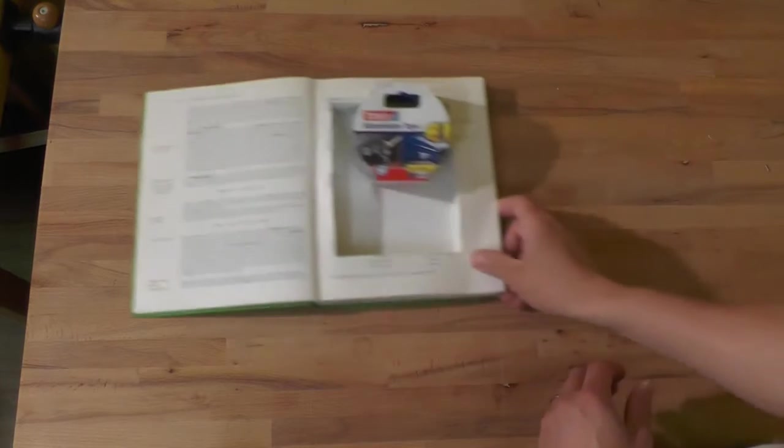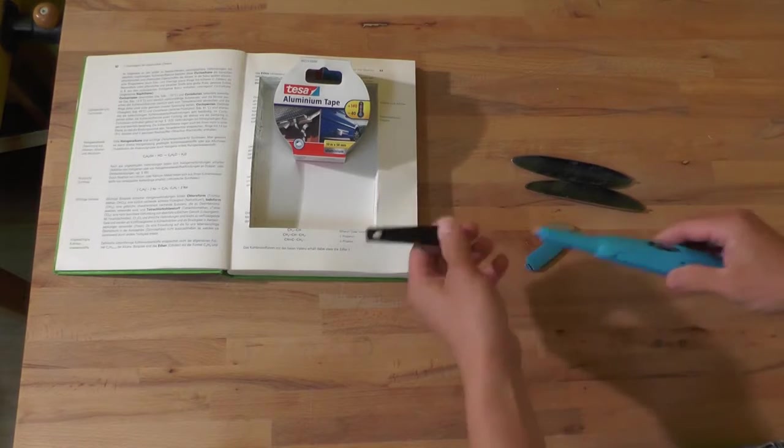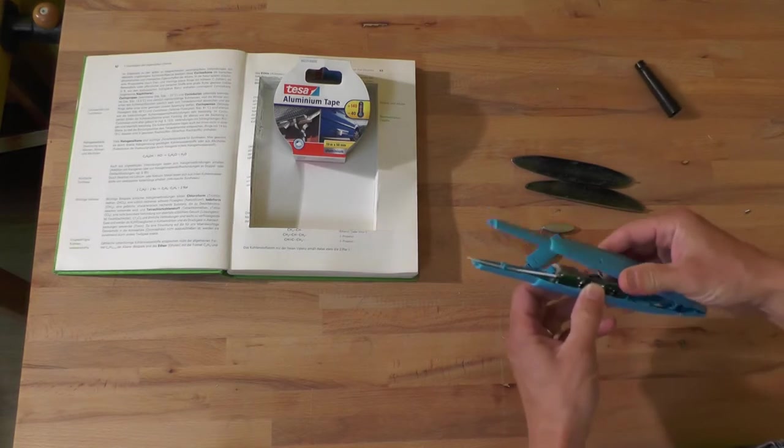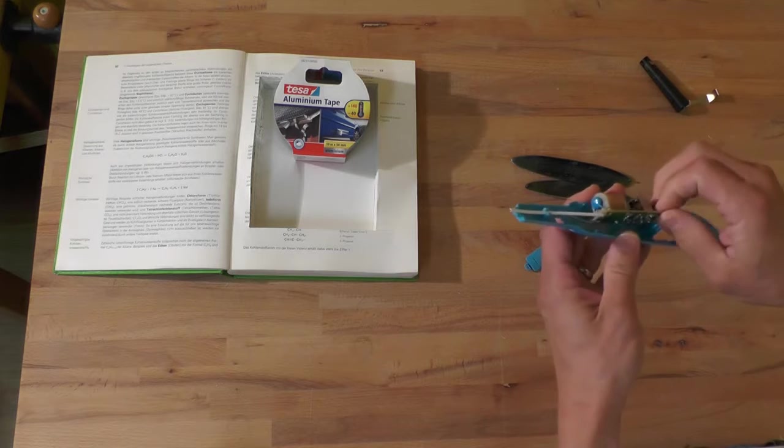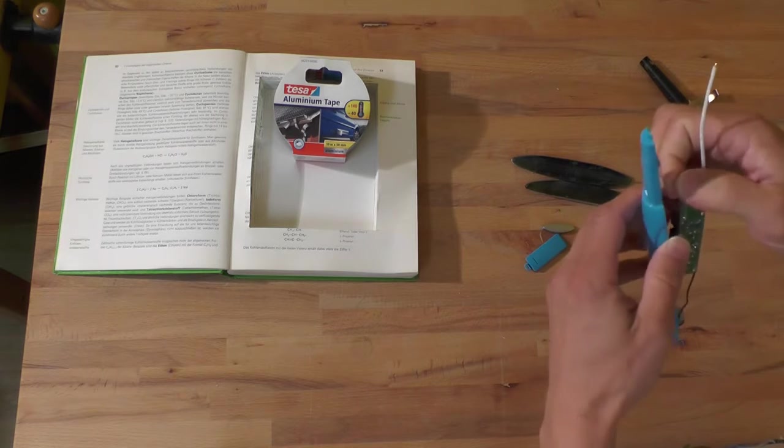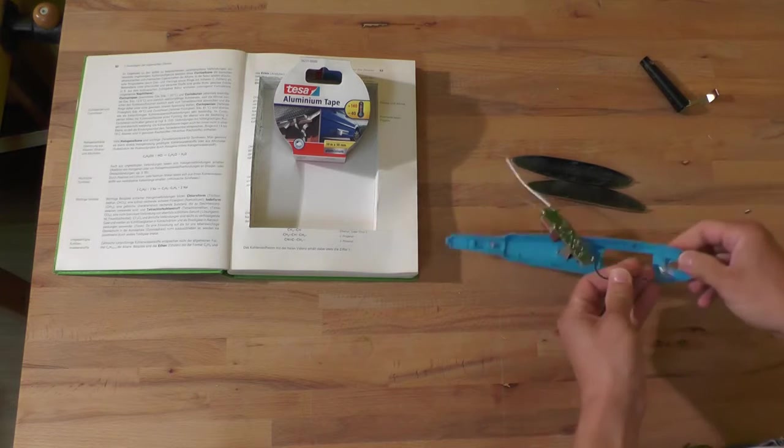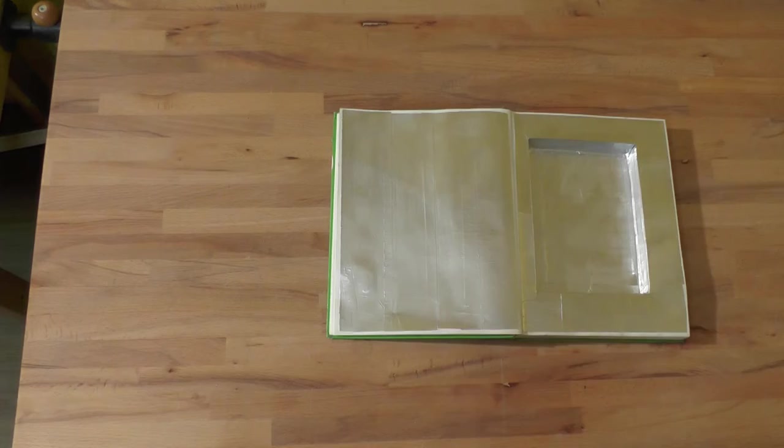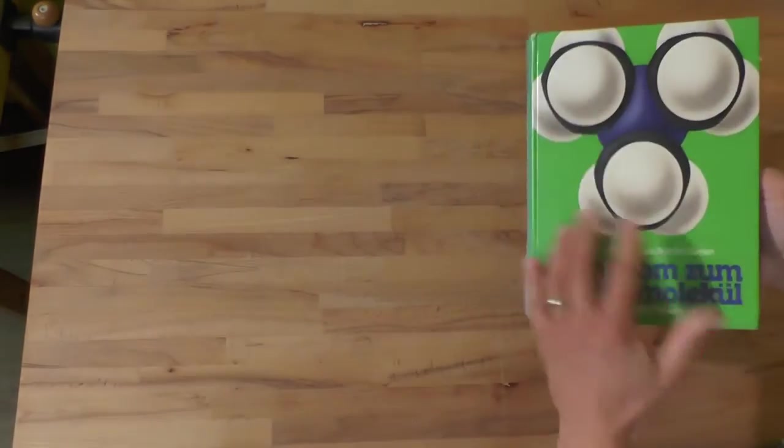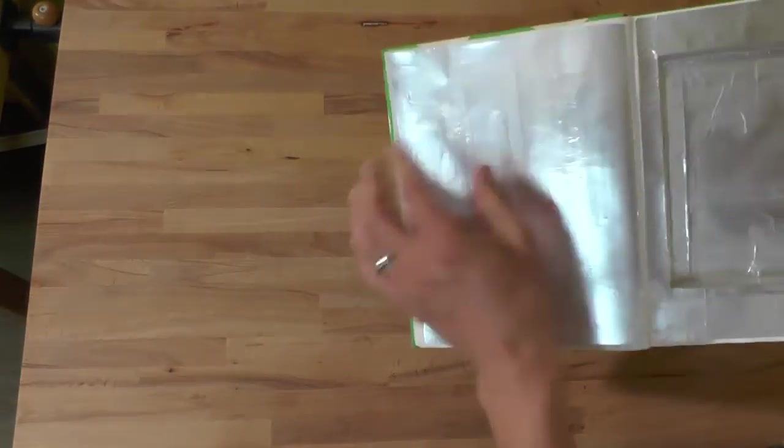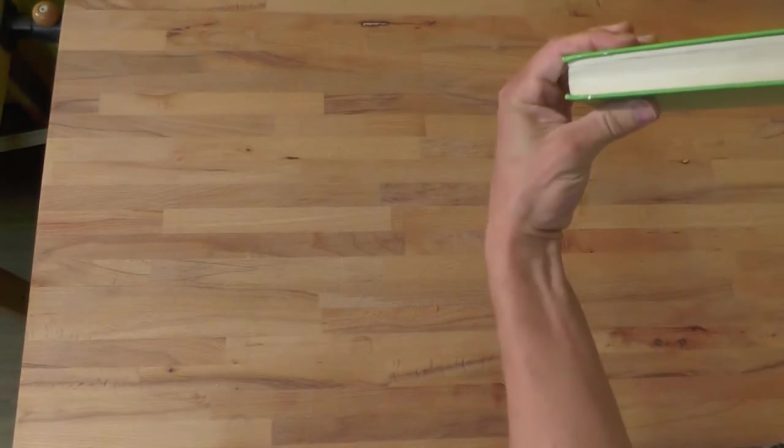After that I need to disassemble the gas lighter. And what we actually need is just here the inner part, the electronic. Okay, so the whole book is now covered with aluminum foil. Make sure you leave a small border here so nothing can be seen from the outside.